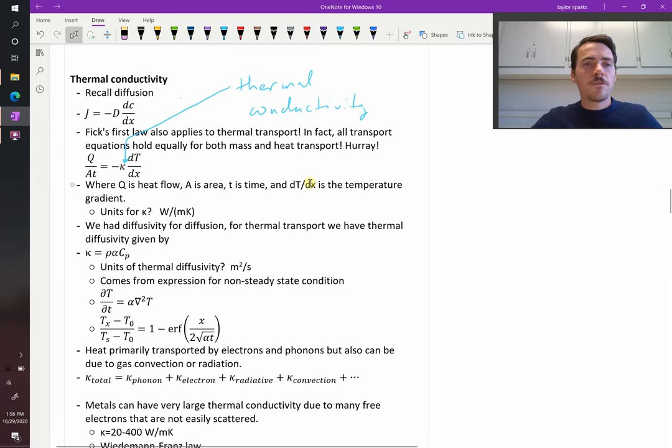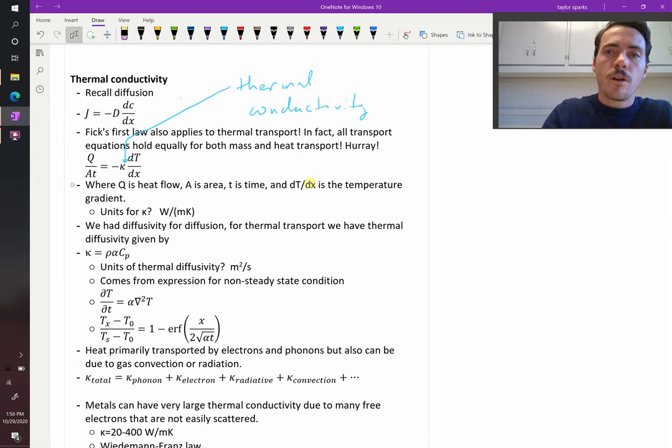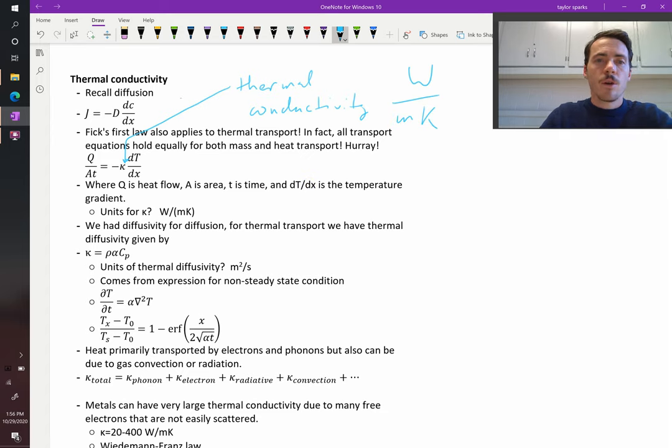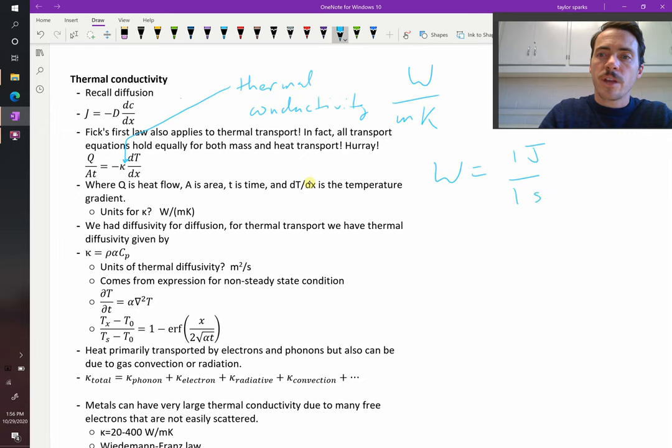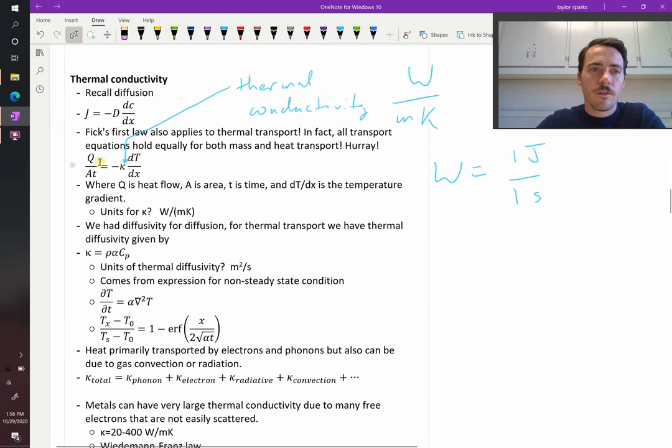So what would the units be? The units of thermal conductivity are watts per meter kelvin. A watt is equal to one joule per second. Joule is going to be our measurement of energy, how many joules.